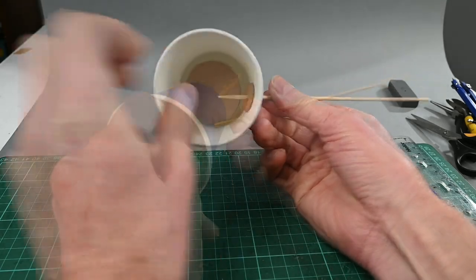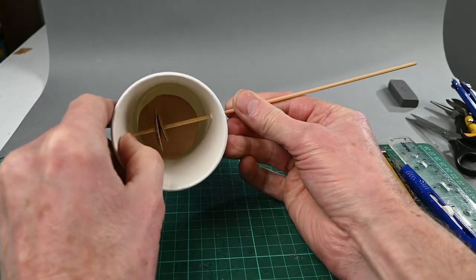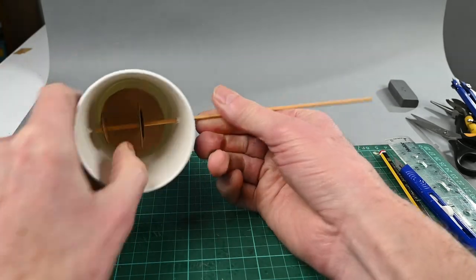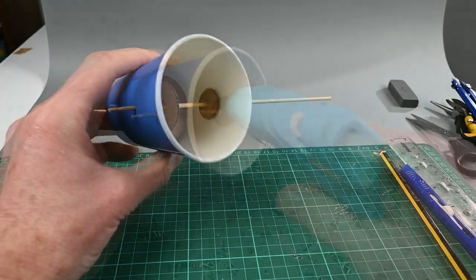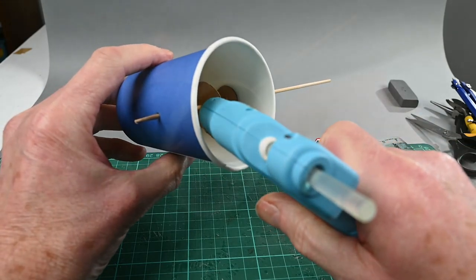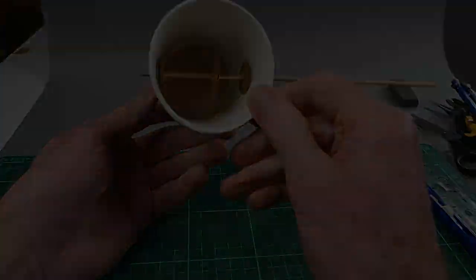Then I fitted the washer onto the bamboo skewer, then the drive wheel, and then another washer on the other side. I used just a dot of hot glue to hold each one into place. And there you go.